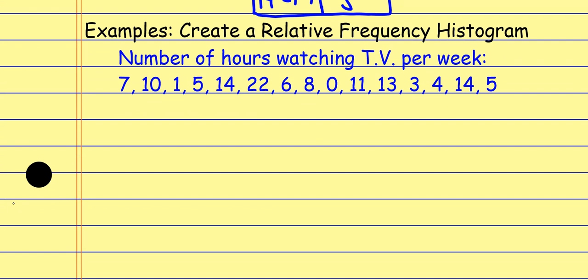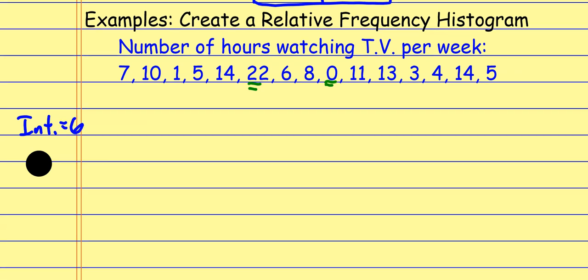For the second example we need to create a relative frequency histogram. I start the same way with a frequency table, looking at the interval to use. The lowest data value is 0 and the biggest is 22, meaning there are 23 data values. If I want around 4 groups, 23 divided by 4 is about 6 — rounding up — so I'll use an interval of 6.